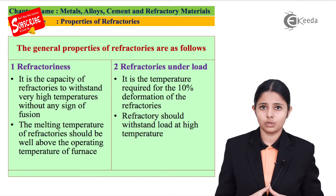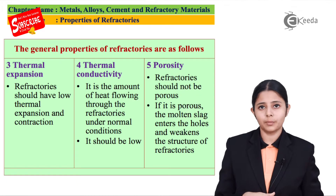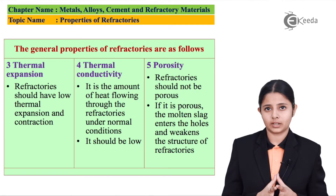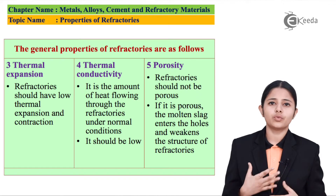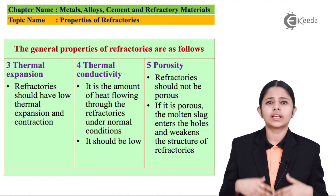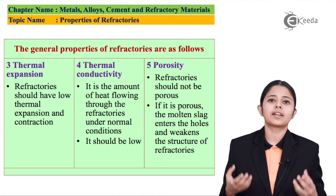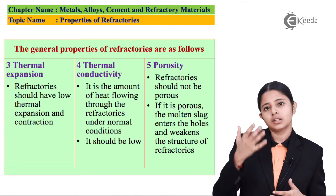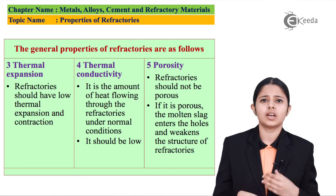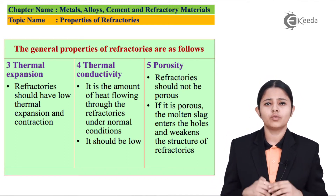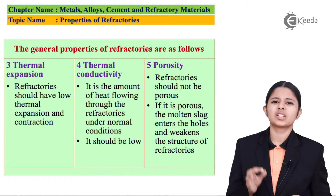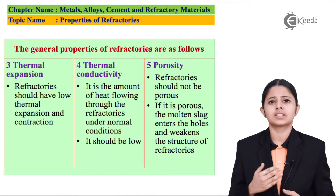The third property is thermal expansion. When exposed to high temperatures, the refractory will expand, and once the temperatures lower down, it will contract. Inside the blast furnace, when temperatures shoot very high during the combustion process or refining of metal, this leads to expansion of the refractory. Once the entire process is done, temperatures go low, leading to contraction. But if the expansion and contraction of the refractory are very high, it will continuously expand and contract, causing fatigue — meaning all other properties of the refractory will start weakening.